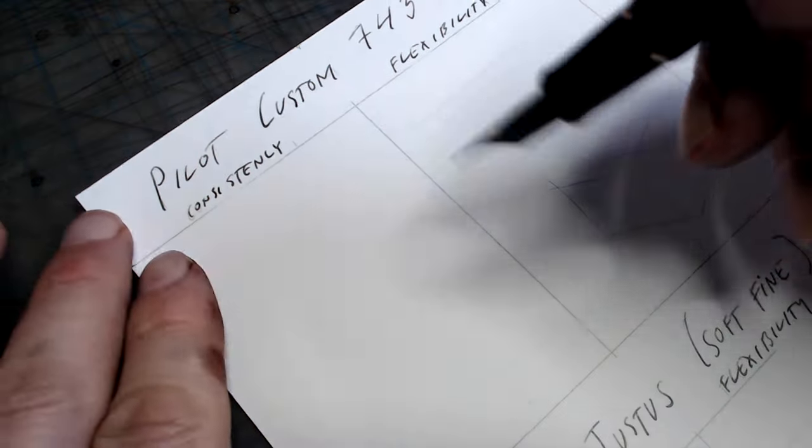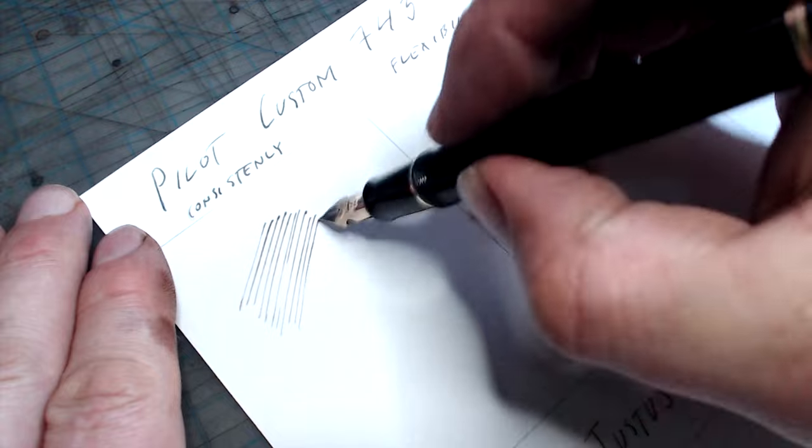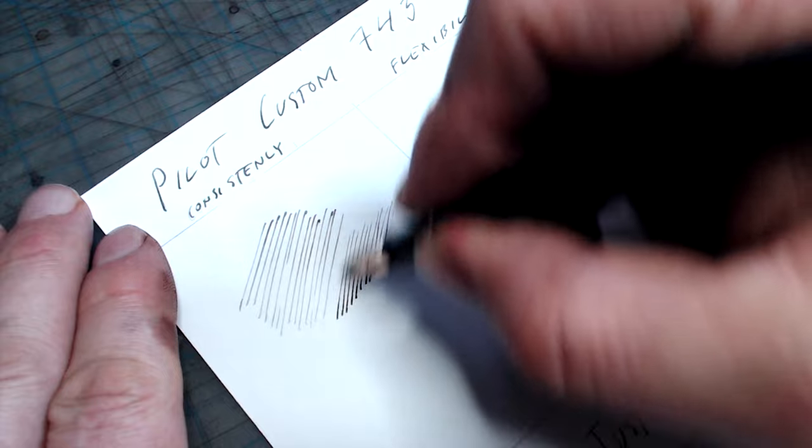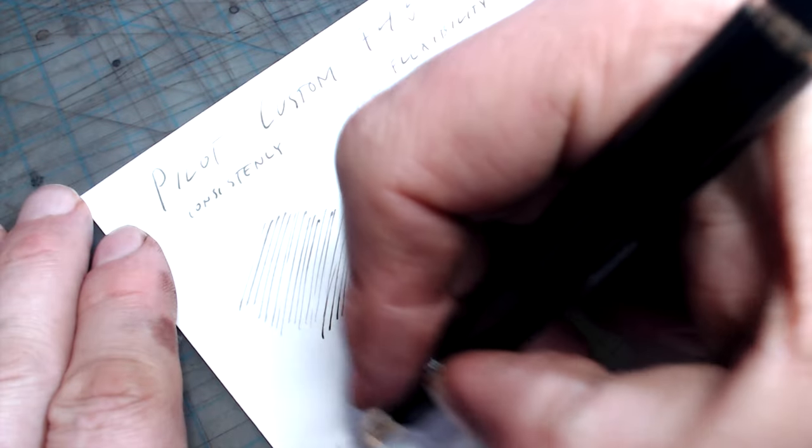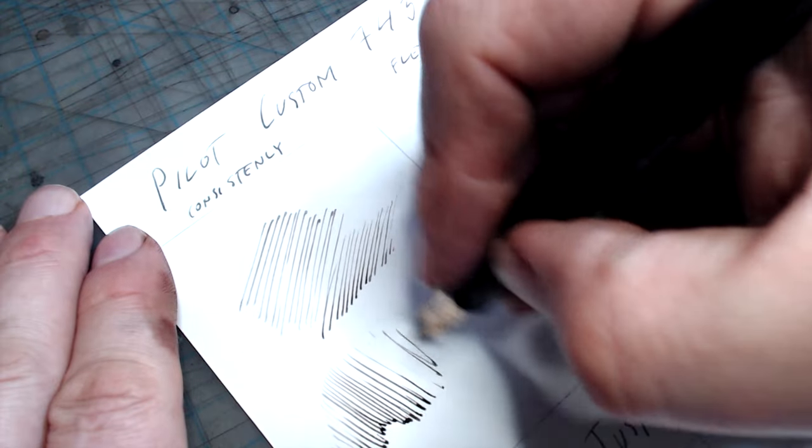In the consistency test, we find that this pen puts down a much finer unflex line than the 912 FA, but, as per usual, one that is equally consistent in every direction. The tines on the 743 FA are stiffer, so you can put down rapid, unflexed strokes without worrying that the tines will flex on you.